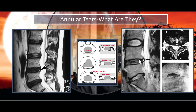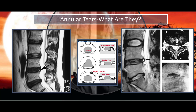Moving down to the disc below it, you'll notice that the disc is darker — that is called desiccation. What I want you to recognize is in the back where my white arrow is, right here where this black arrow is, notice that bright white spot. That is considered an annular tear, and you can see it here also. That bright white spot in the outer part of the disc, or the periphery of the disc, is generally the area that has the majority of nerve fibers, making it capable of transmitting pain.